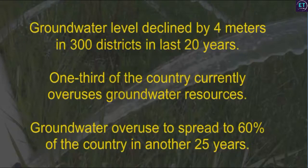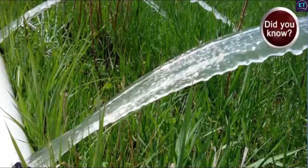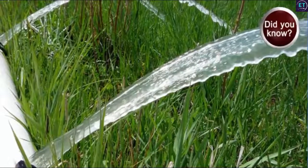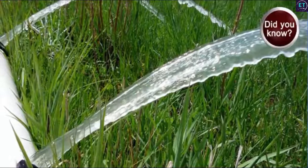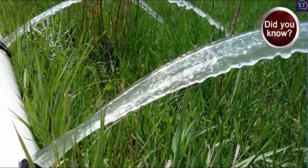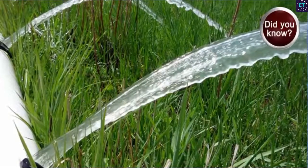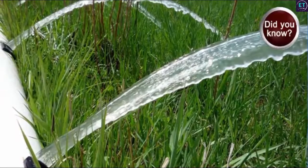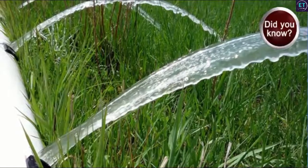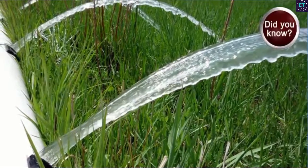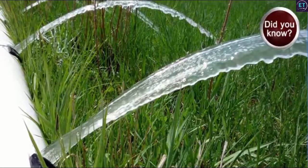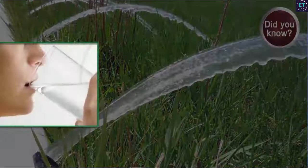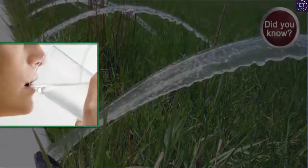Did you know? Groundwater makes up more than 95% of all the unfrozen freshwater available on the earth. Thus, if groundwater becomes scarce, there will be a severe shortage of water for our personal, agricultural, and industrial use.